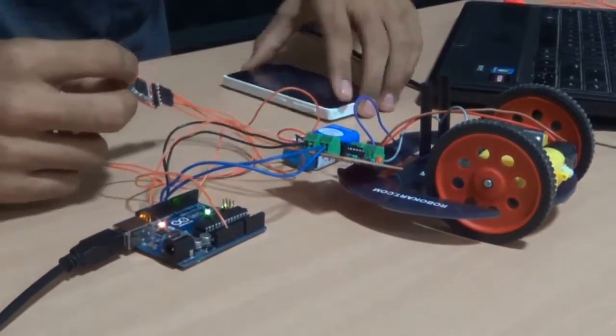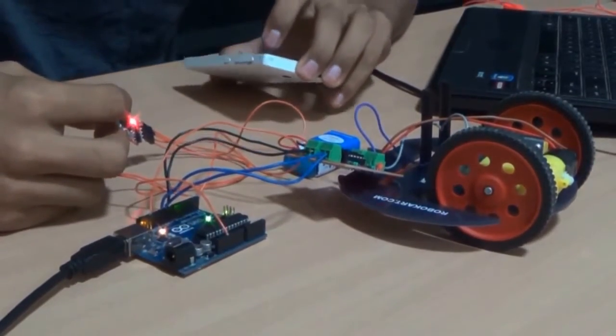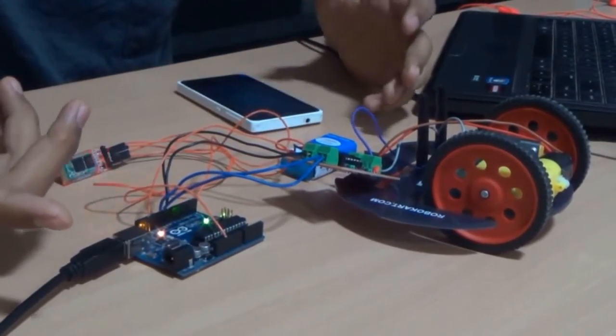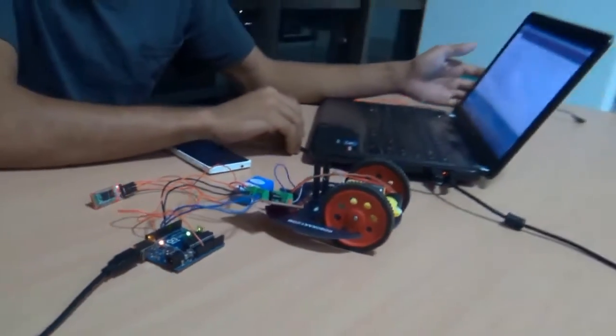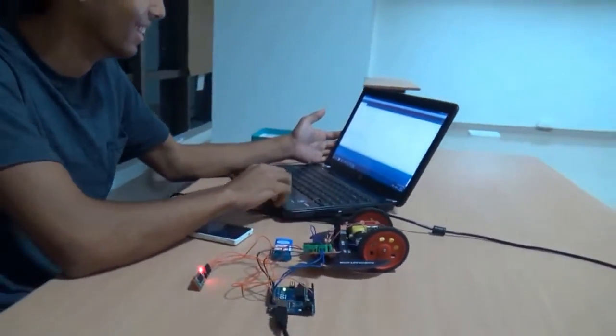This module is sensing by this Android phone's module Bluetooth. This is a simple code for this Bluetooth control car.